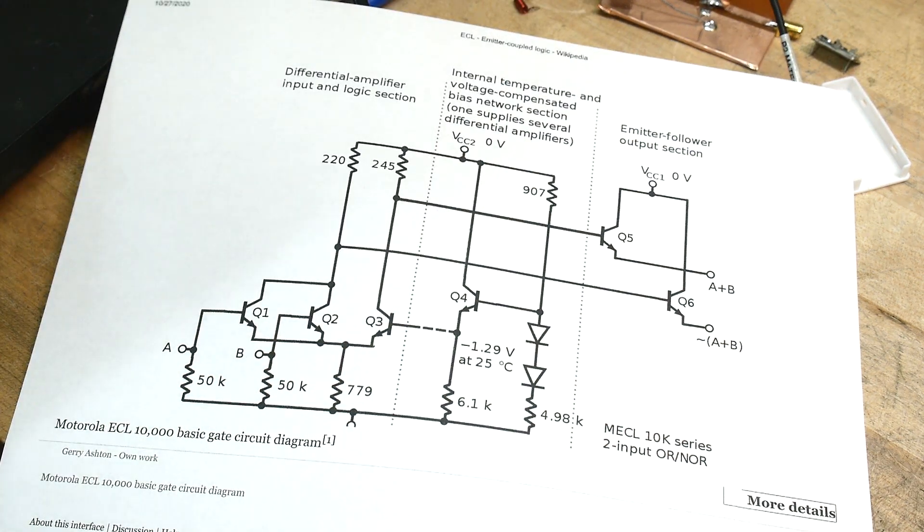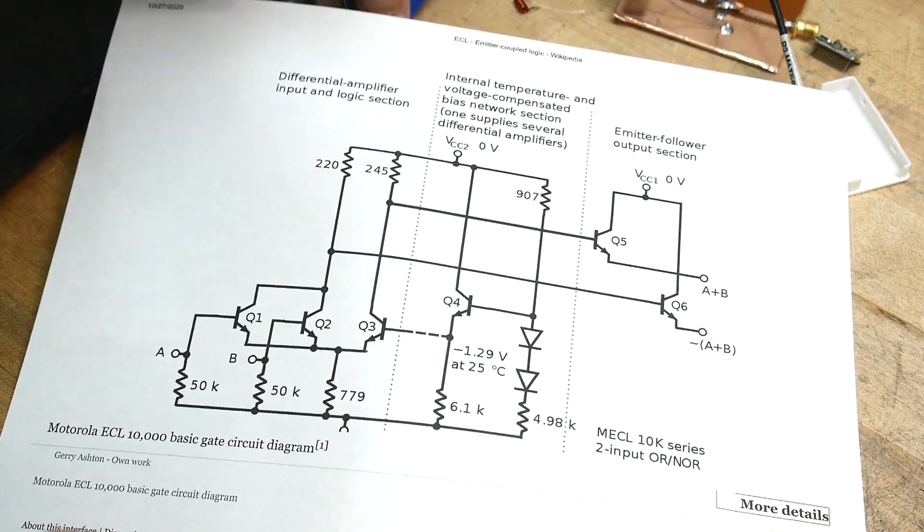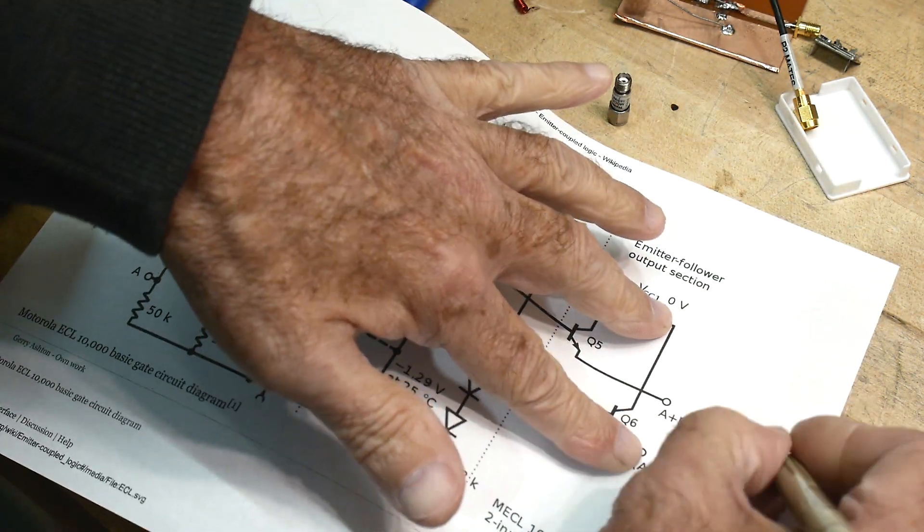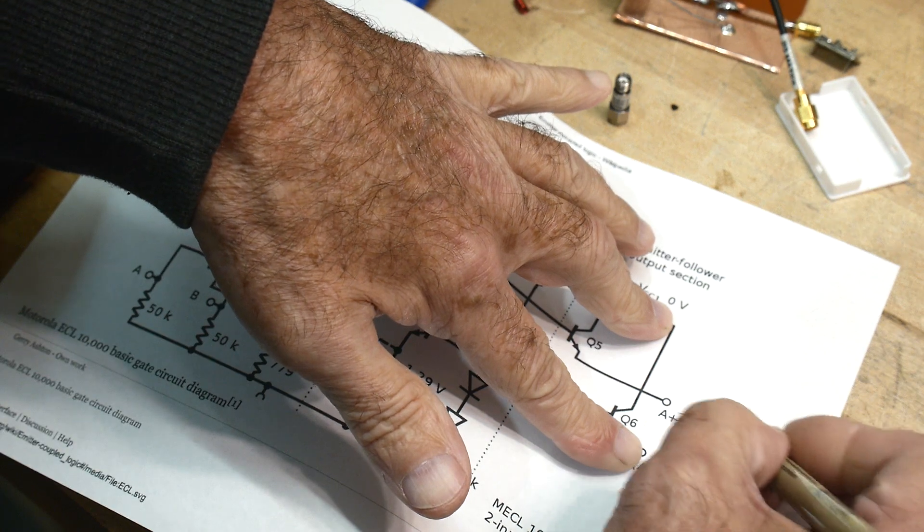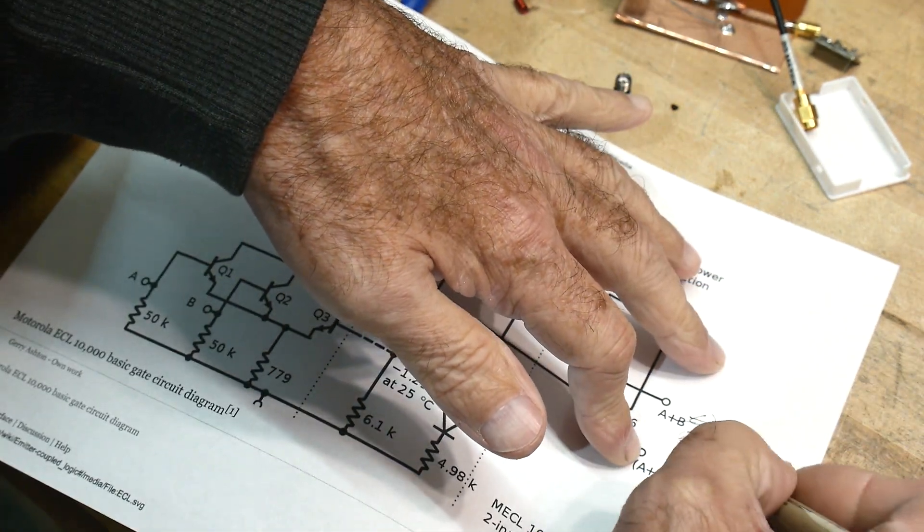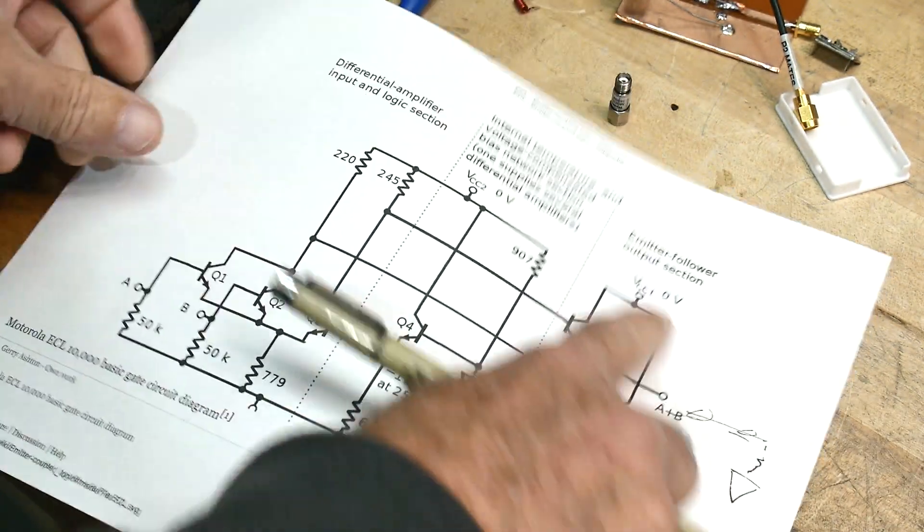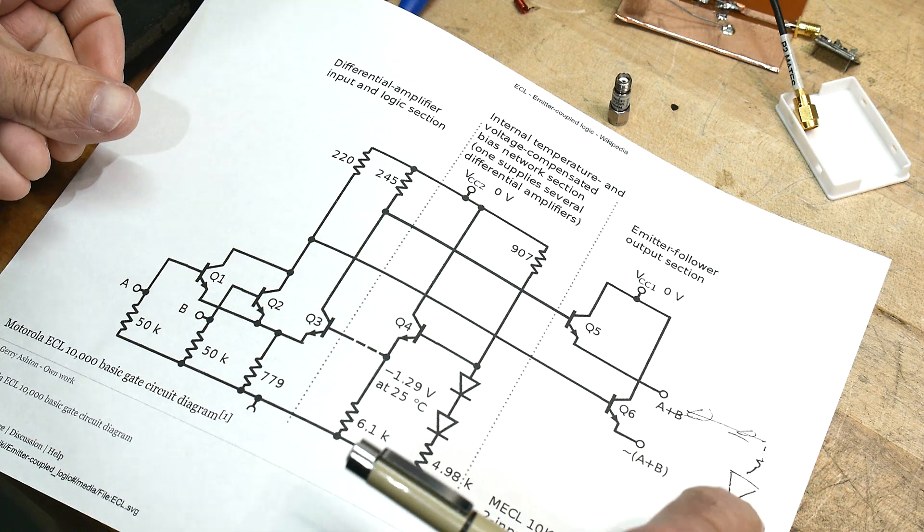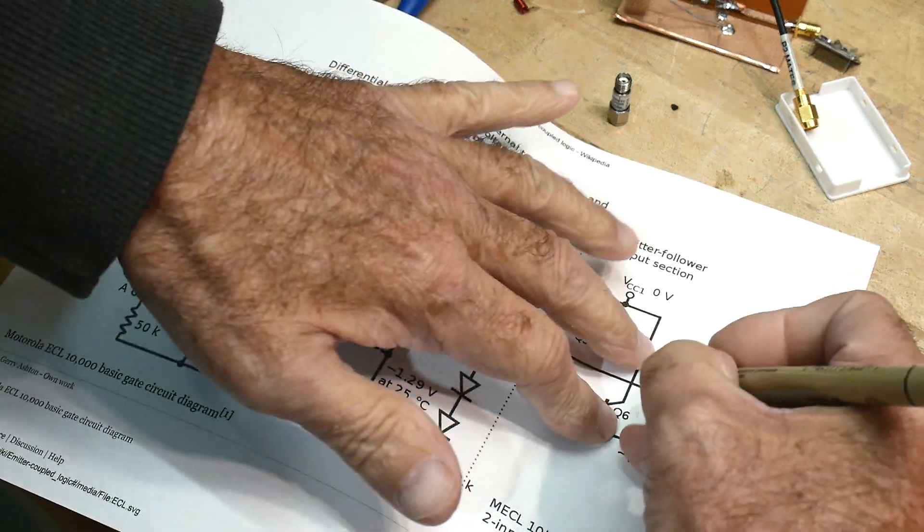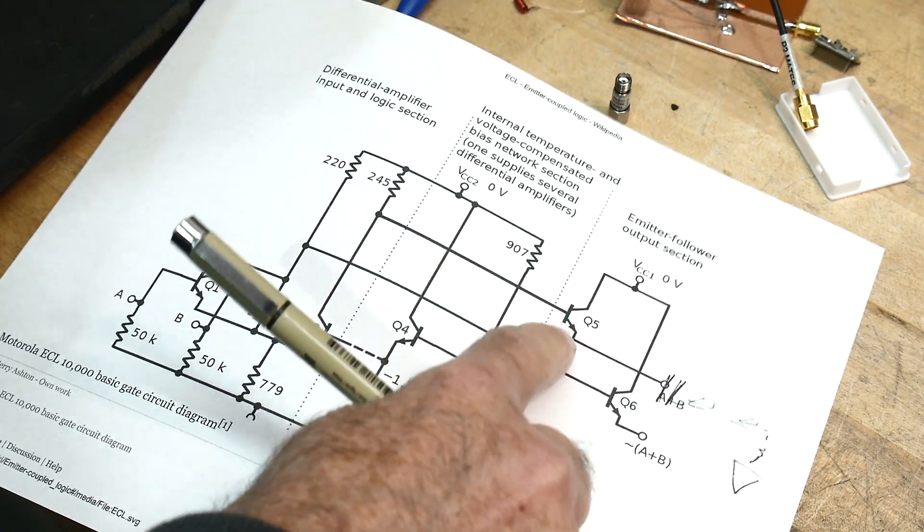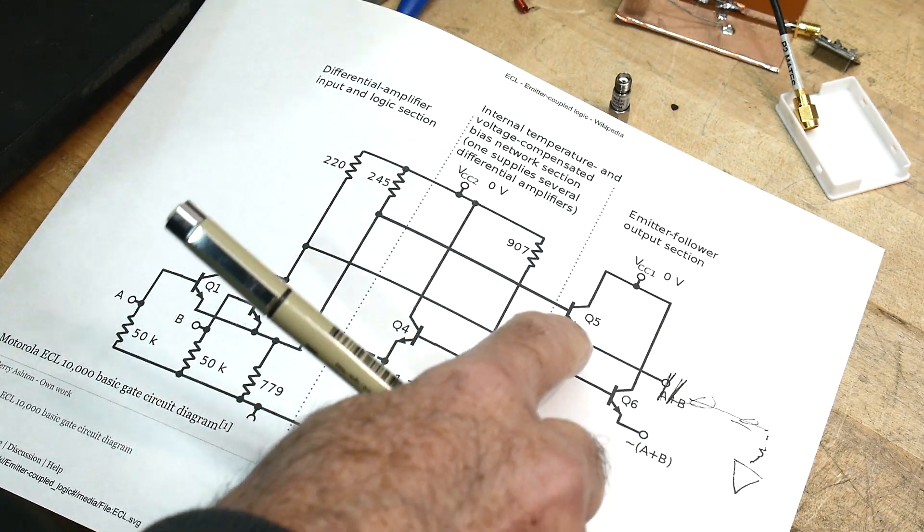And they would work great if you had something like a 50 ohm transmission line terminated in 50 ohms. Then there'd be a path for this thing to operate. And it would work just great. But remember in mine, I put a blocking capacitor. So that blocking capacitor gives this transistor really nowhere to go.